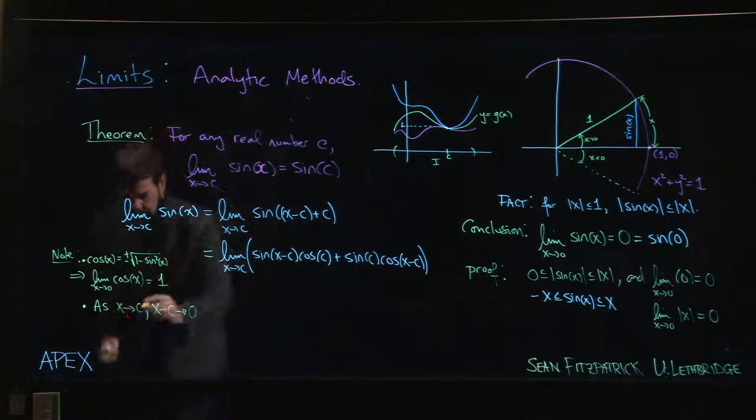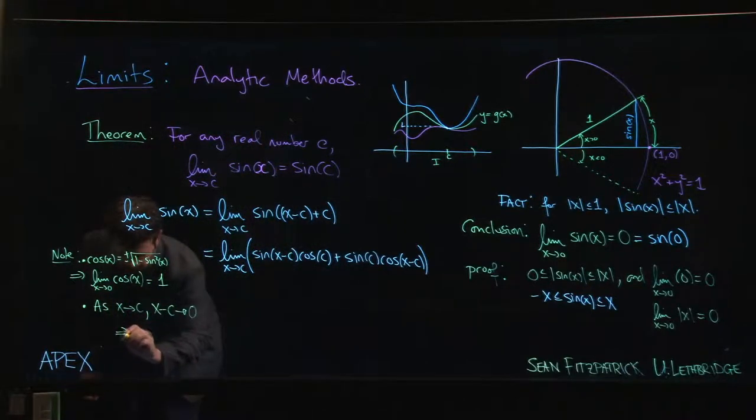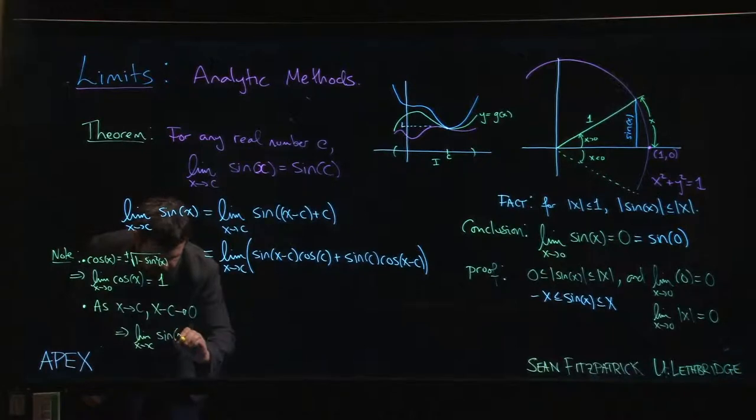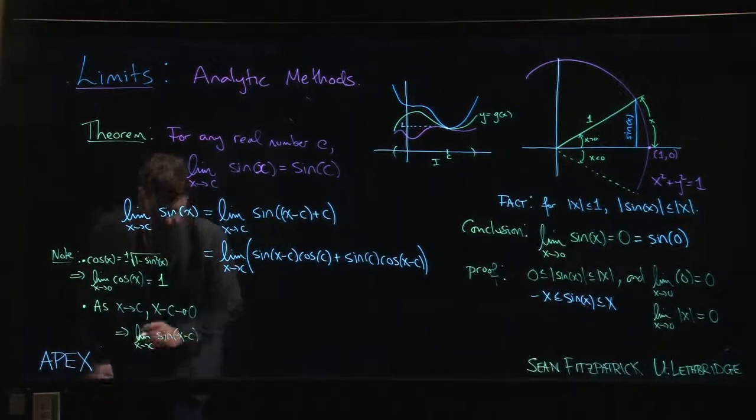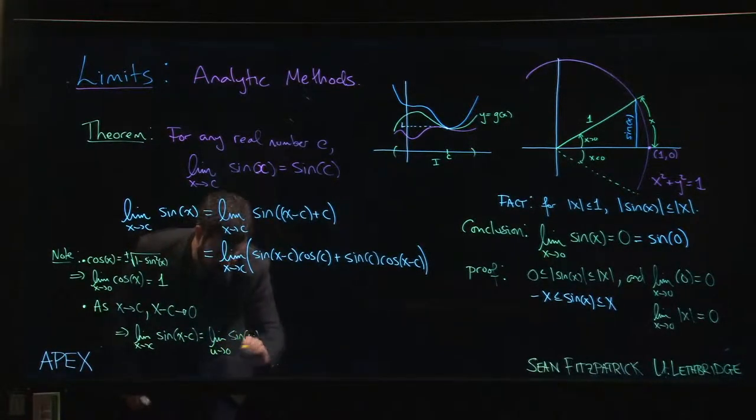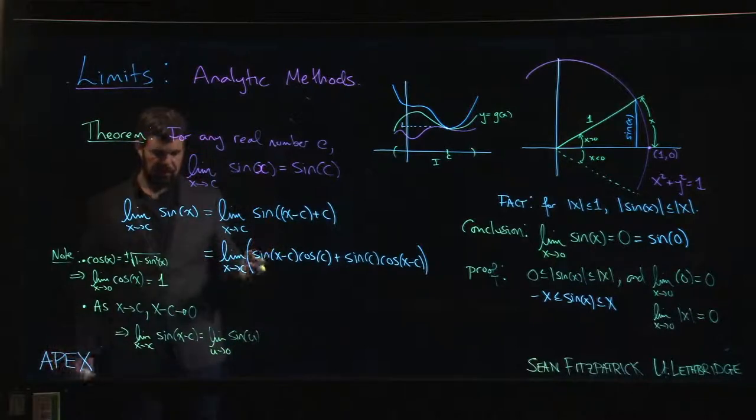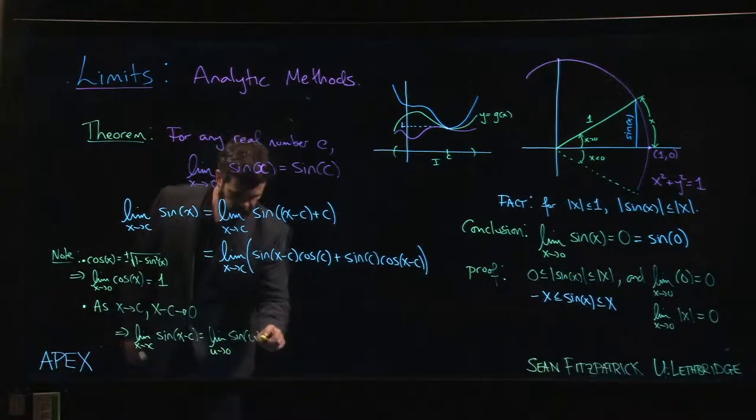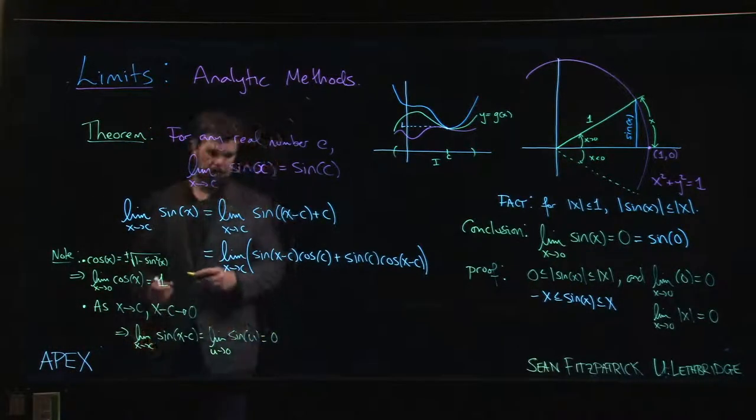And so what you can conclude from this is that the limit as x approaches c of sine of x minus c is the same thing as the limit, maybe we do some substitution, say u is x minus c, the limit as u goes to 0 of sine of u. Maybe you call it theta if you like. And we've just established that that limit is 0.